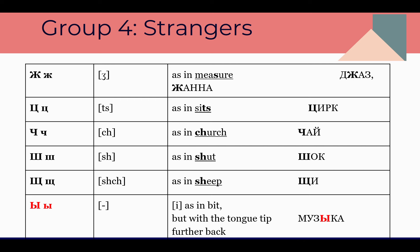And here is the next group, number four: Strangers — letters that scare students. The first is Ж — as in 'measure.' Two example words: Джаз — jazz — music! And the Russian female name Жанна.